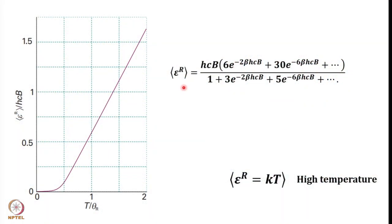In the previous lecture, we have already discussed the translational contribution. We have also addressed rotational, but restricted to a linear rotor. The expression we obtained gives the mean rotational energy in terms of HCB — the rotational constant — with the numerator and denominator expressed using beta, which represents 1 over KT.